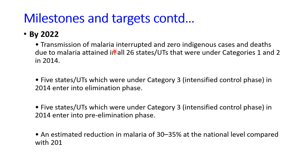By 2022, the five states/UTs under Category 3 were to enter the elimination phase and if possible the pre-elimination phase. An estimated reduction in malaria of 32 to 35 percent at the national level compared with 2014 was targeted for 2022, compared to 15 to 20 percent expected for 2020.